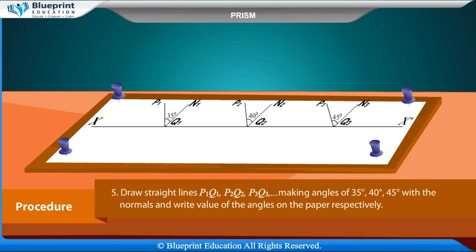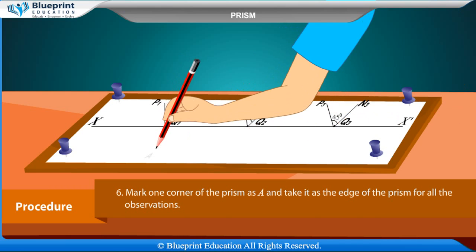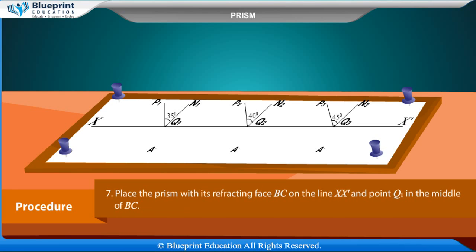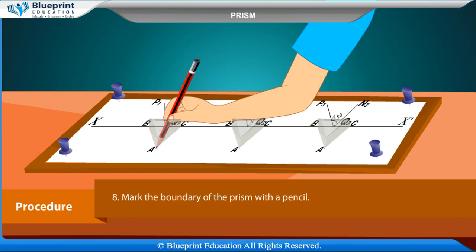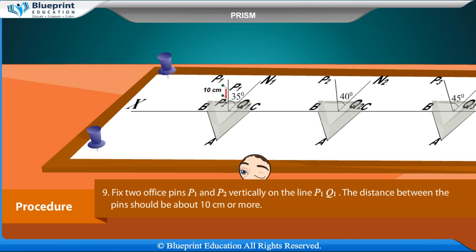Draw straight lines P1Q1, P2Q2, P3Q3 making angles of 35°, 40°, and 45° with the normals, and record the angle values on the paper. Mark one corner of the prism as A and take it as the edge of the prism for all observations. Place the prism with its refractive face BC on the line XX', with point Q1 in the middle of BC.